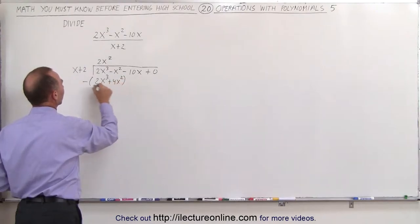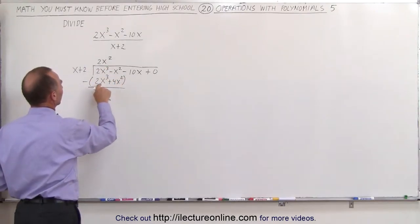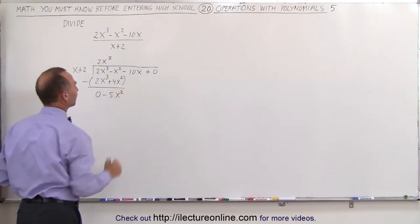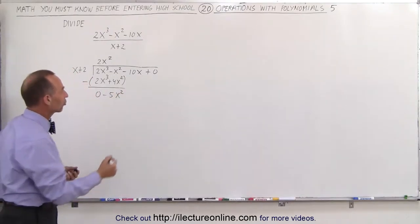Now we subtract this from what's above there, so this subtracted from that gives us 0, and this subtracted from that gives us minus 4x squared plus a minus x squared or a minus 5x squared. So now we drop down the next term,